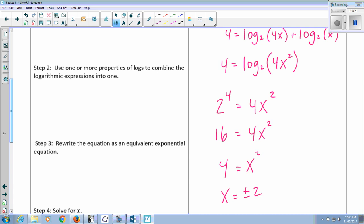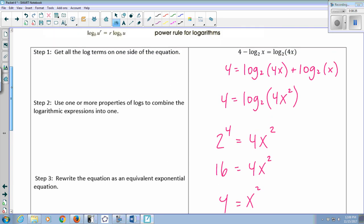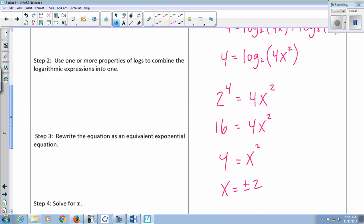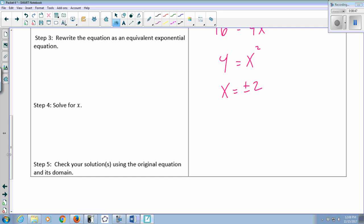Before I circle it, I'm going to check my solution in the original equation. And I cannot put minus 2 into a logarithm. You can't put negative values into a log, only positive values. So negative 2 is definitely not a solution because right here I would have to take log base 2 of negative 2. That's not part of the domain. So I discard that one. And so I would just say x equals 2 is my solution.